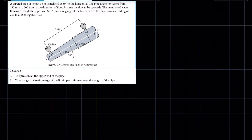Hello everyone, Kotwane, The Nature God here. In this video we are going to look at how we apply Bernoulli's theorem for a tapered pipe that is at an angle with a horizontal. Now the problem reads as follows.